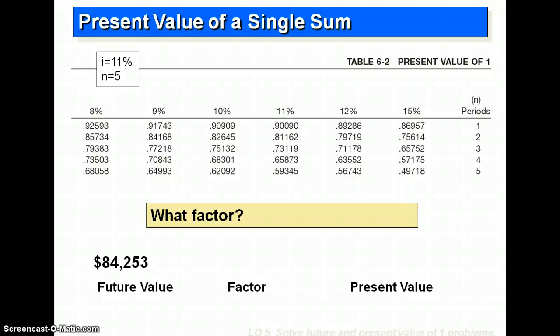So again, you see the interest rates across the top, we see the time periods down the side. What factor are we looking for? We're looking at 11% for five periods. So we're looking at .59345.